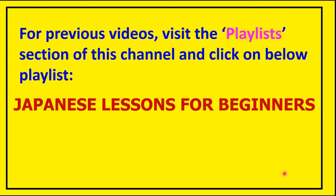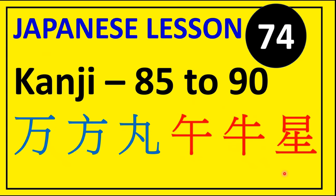Under this playlist you will find all these lessons all together at one place. And if you have missed any of the previous lessons, you can immediately go to that video directly and watch the lesson. So having said that, let's begin today's lesson: Japanese lesson 74, Kanji 85 to 90, in which we shall learn these six kanji characters.